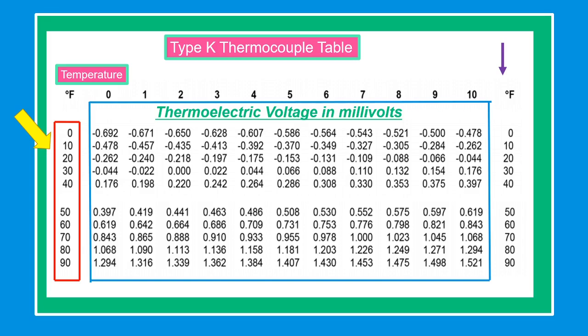Now, let's proceed to our thermocouple chart. In the left-hand column that I marked are the temperatures, can be either degrees Celsius or degrees Fahrenheit, and it is tens or hundreds. And on the top horizontal number, from 0 to 10, are ones for temperatures to be accurate. And on the inside value are thermoelectric voltage in millivolts.